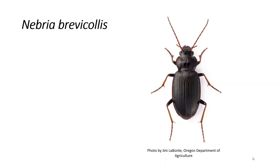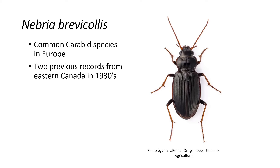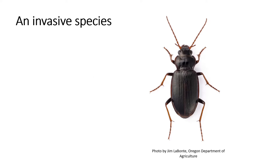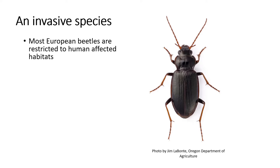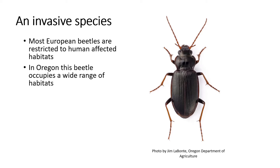This is the new beetle species: Nebria brevicollis. It's very common in Europe — possibly the most common ground beetle species there — but not something that normally occurs in North America. There were a couple of records of this species in Eastern Canada from the 1930s, but those are the only records in the Americas up until about 2007, when it was found by my colleague Jim Labonte down in Oregon. It's now a new species in Western Canada, spreading north from Oregon. This species is fairly invasive — unlike most European beetles that are restricted to human-affected areas, this beetle in Oregon occupies a very wide range of habitats. It also has functional wings and can disperse from area to area by flight.